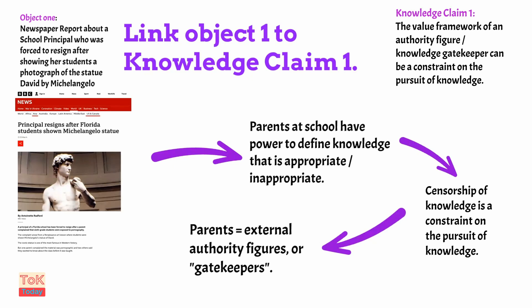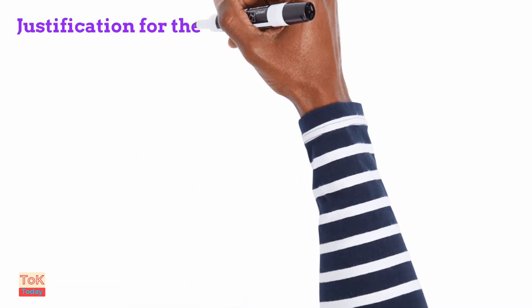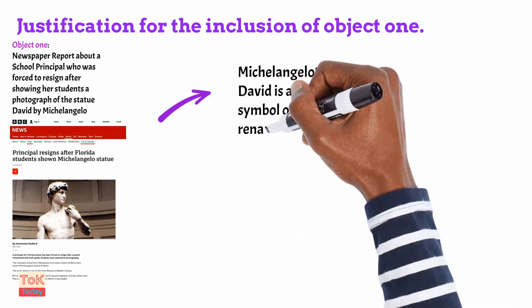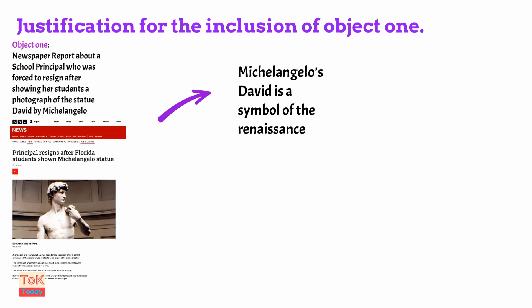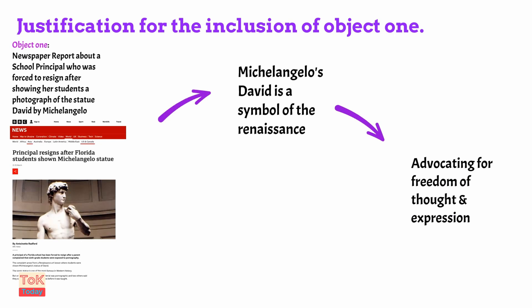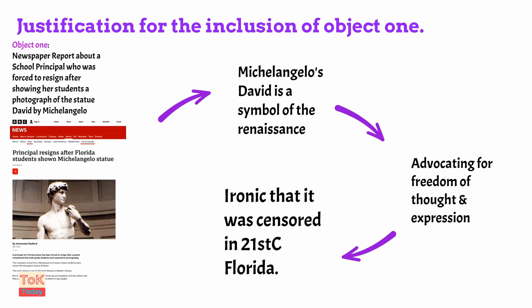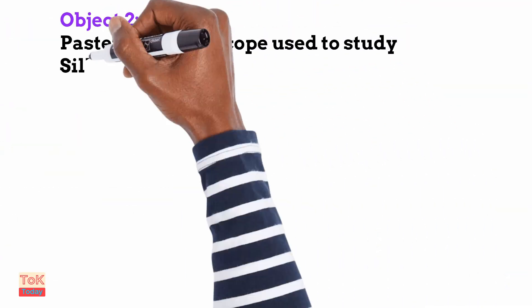Finally, I need to justify the inclusion of object one. Here we have a great paradox: Michelangelo's David is a symbol of the Renaissance period, a time when people were advocating for freedom of thought and expression, yet in 21st-century Florida these parents wanted to restrict freedom of thought and expression, apparently on moral grounds. This object is included because it shows a real paradox in the meaning and application of this piece of knowledge — the statue.